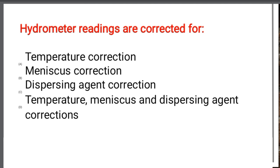The first question: Hydrometer readings are corrected for — Option A: Temperature correction. Option B: Meniscus correction. Option C: Dispersing agent correction. Option D: Temperature, meniscus, and dispersing agent corrections. The correct answer is Option D: Temperature, meniscus, and dispersing agent corrections. We have to do all those three corrections.